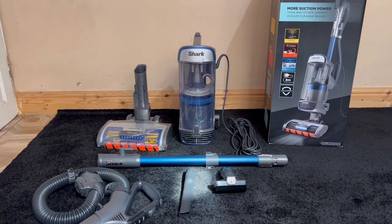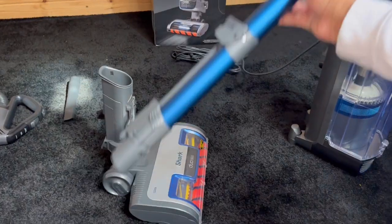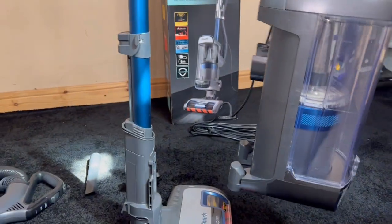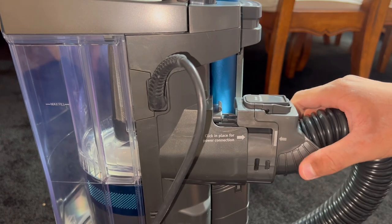How to assemble the new Shark Anti-Hair Wrap XL Vacuum. First, push your wand into the floor tool until it locks into place. Next, put on your main unit, it just slides on. After that, you can push the hose in until it clicks into place.